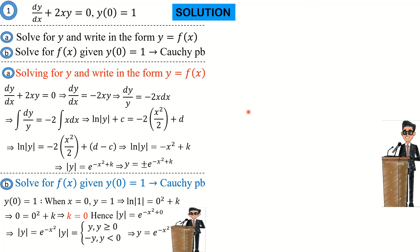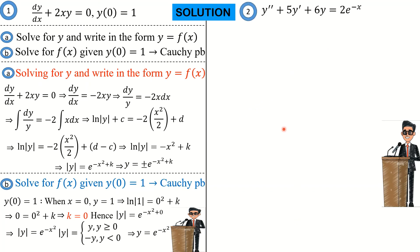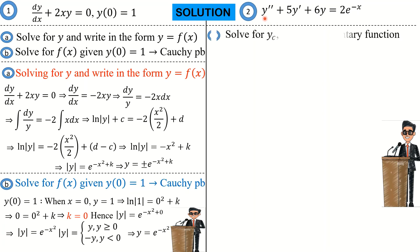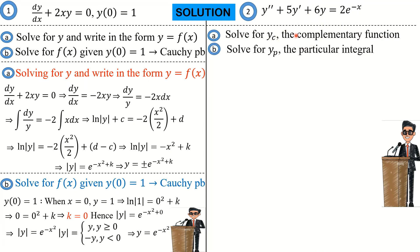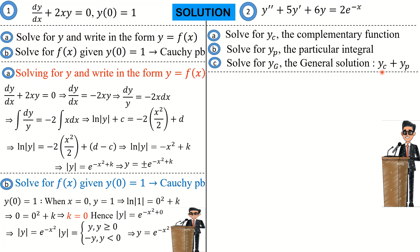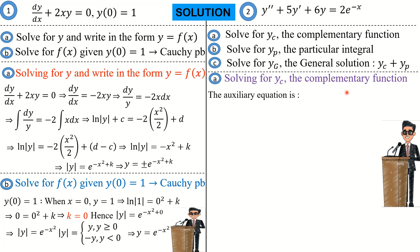Now we go to the second part of exercise 2 — solving the second-order differential equation. The steps we will follow are: first, solve for the complementary function yc; next, solve for the particular integral yp; and lastly, solve for the general solution yg, which is simply the sum of the complementary function and the particular integral.